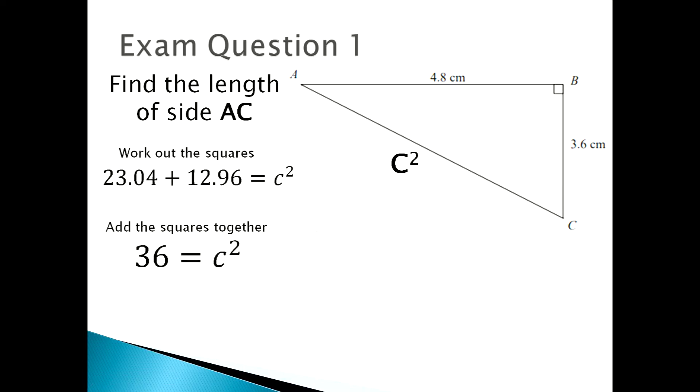Then you square root. You've got a number and c equals 6, which means that the side AC is equal to 6 centimeters. And that's how you would answer that kind of question.